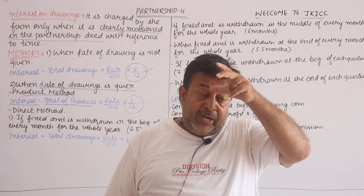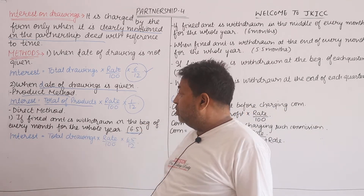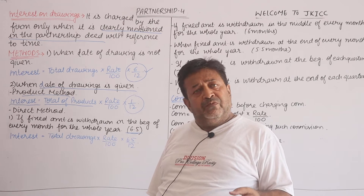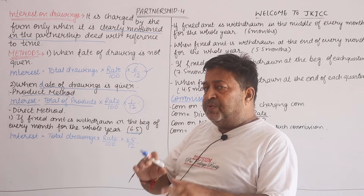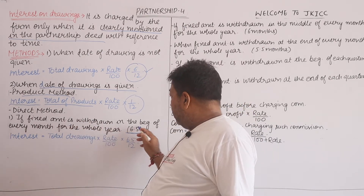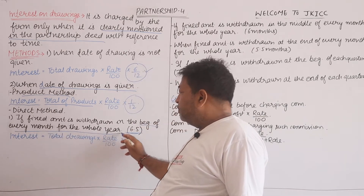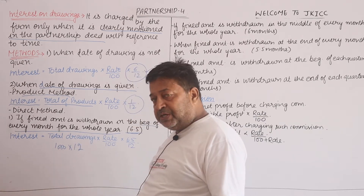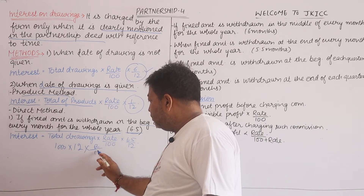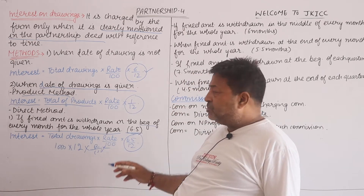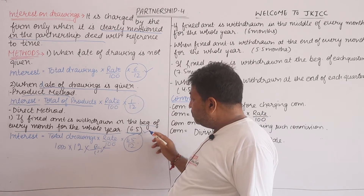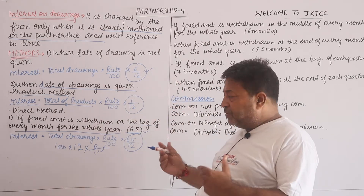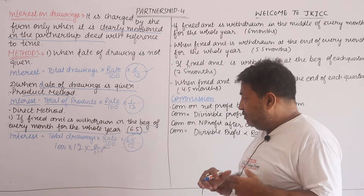There are also direct methods. In direct methods, you just need to remember the month status. Case: a fixed amount is withdrawn at the beginning of each month — meaning 1st April, 1st May, 1st June, 1st July, and so on for the whole year. In that case, total drawings are multiplied by the rate upon 100, and then by 6.5/12. So remember: Case 1 is 6/12, product method is 1/12, and beginning of each month is 6.5/12.